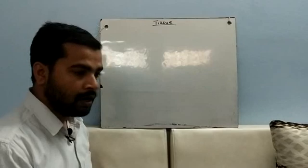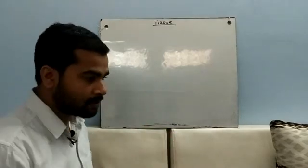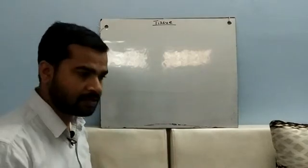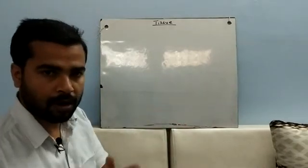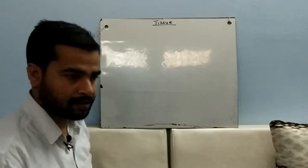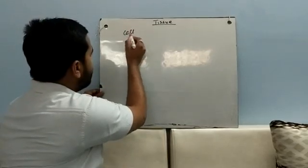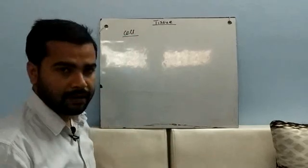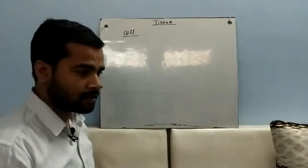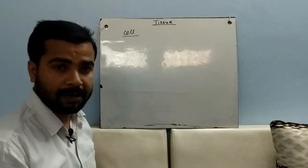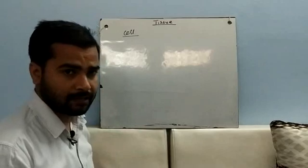Let us see how we can go from one level to the next level — from cell to tissues to organ to organ system level of body organization. Here we have a single cell organism, say for example a bacteria, or a protozoa like euglena or paramecium, or a yeast cell. These are all single-celled organisms.